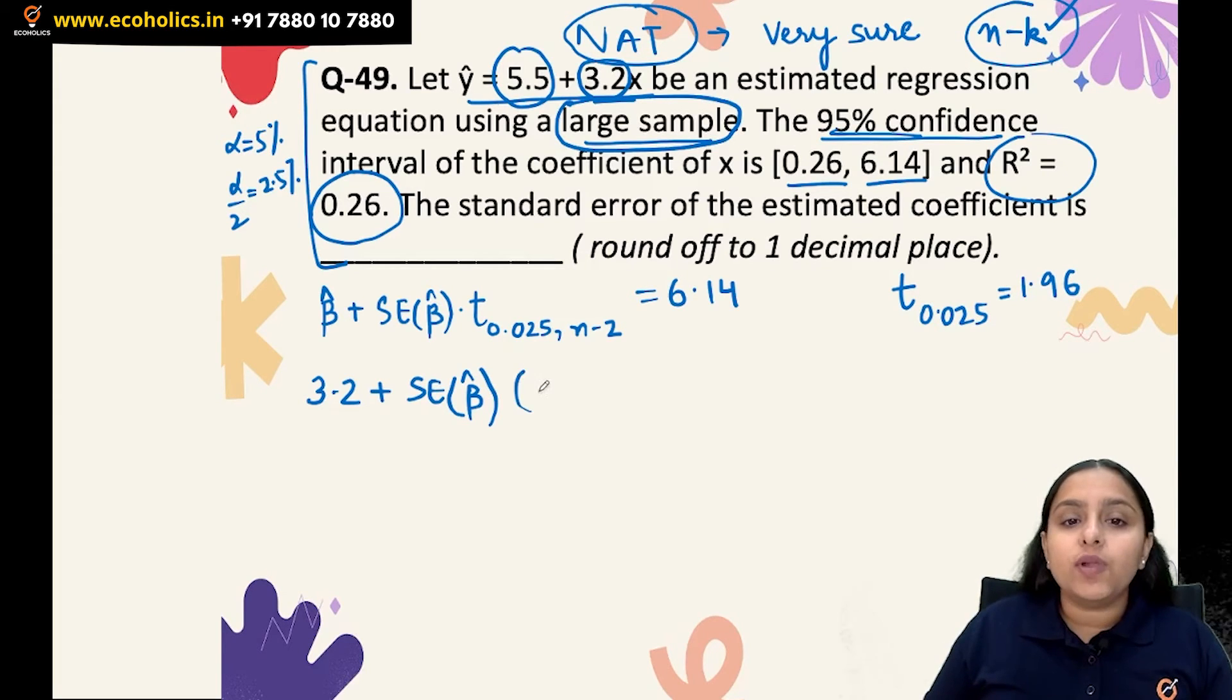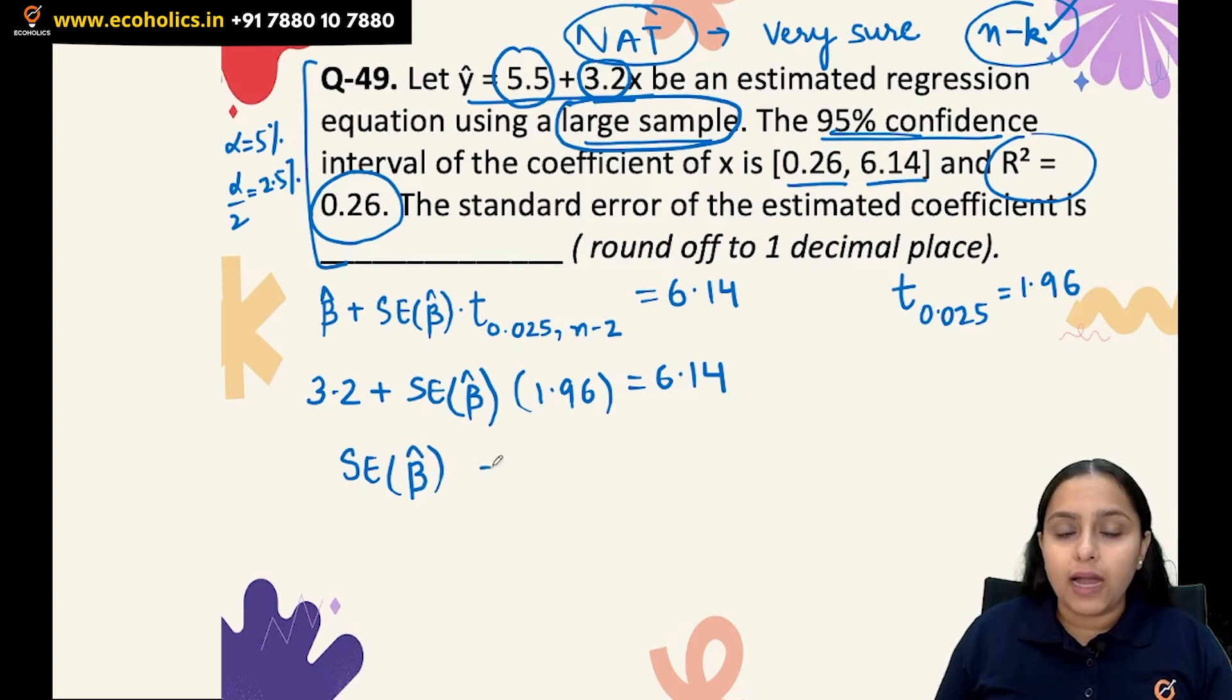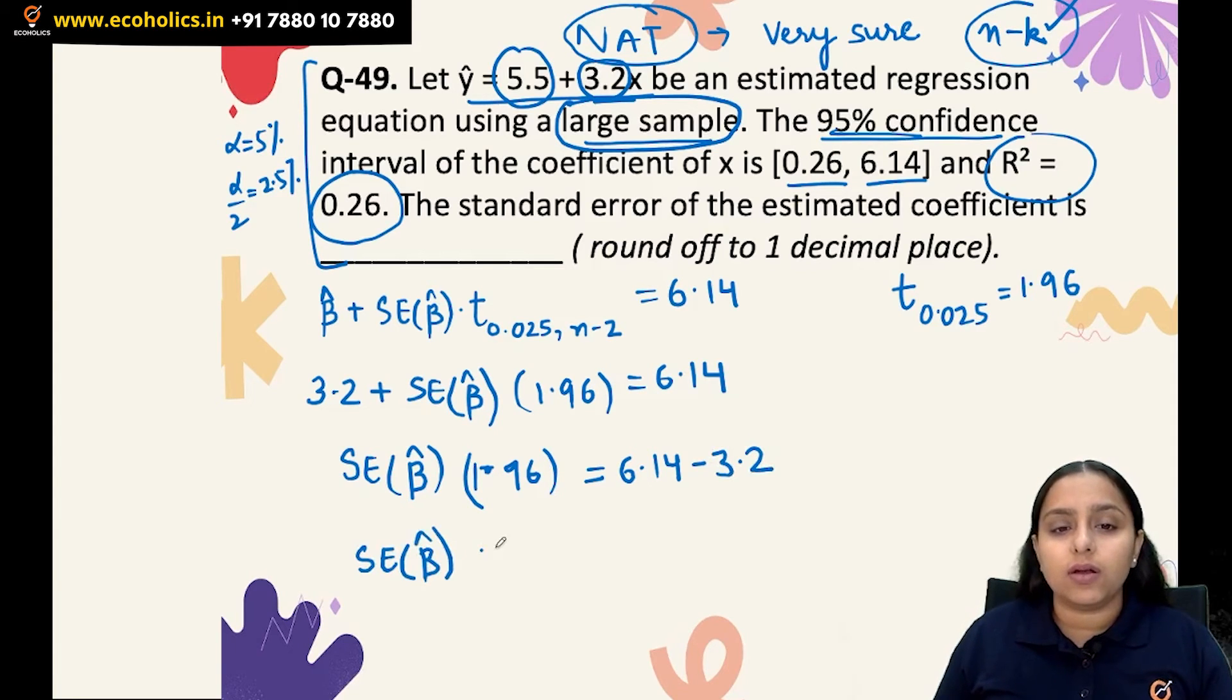So I will be putting up the same value which is equivalent to 6.14. Now solving this: standard error of β̂ times 1.96 equals 6.14 minus 3.2. Then dividing by standard error of β̂ and dividing the result by 1.96, which will give me the answer as 1.5.